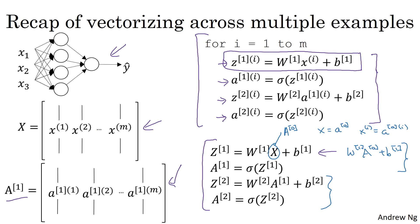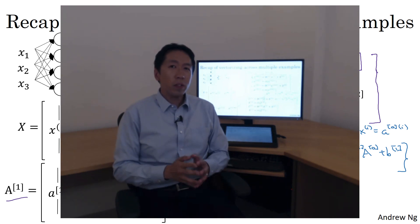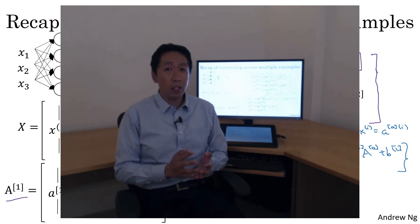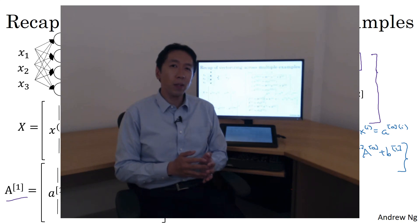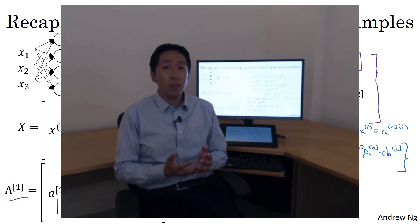Here we have a two-layer neural network, and when we go to a much deeper neural network in next week's videos, you'll see that even deeper networks are basically taking these two steps and doing them even more times. That's how you vectorize your neural network across multiple training examples. Next, we've so far been using sigmoid functions throughout the neural network, but it turns out that's actually not the best choice. In the next video, let's delve further into how you can use different activation functions, of which sigmoid is just one possible choice.